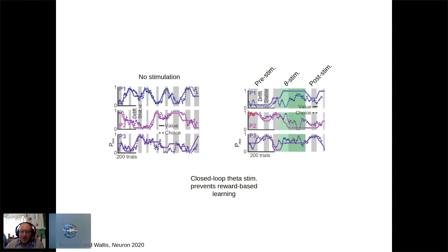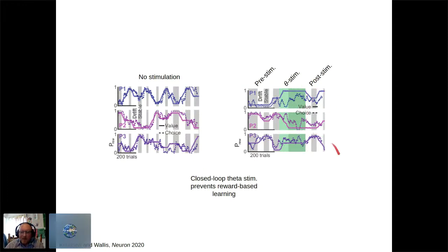During stimulation, the animal can eventually learn, but does so through brute force rather than efficient reward-based updating. Crucially, as soon as the stimulator is turned off, performance washes out immediately and the animal returns to normal behavior. Normally it takes 1–30 trials to reach learning criterion; during stimulation this is pushed into the hundreds of trials.